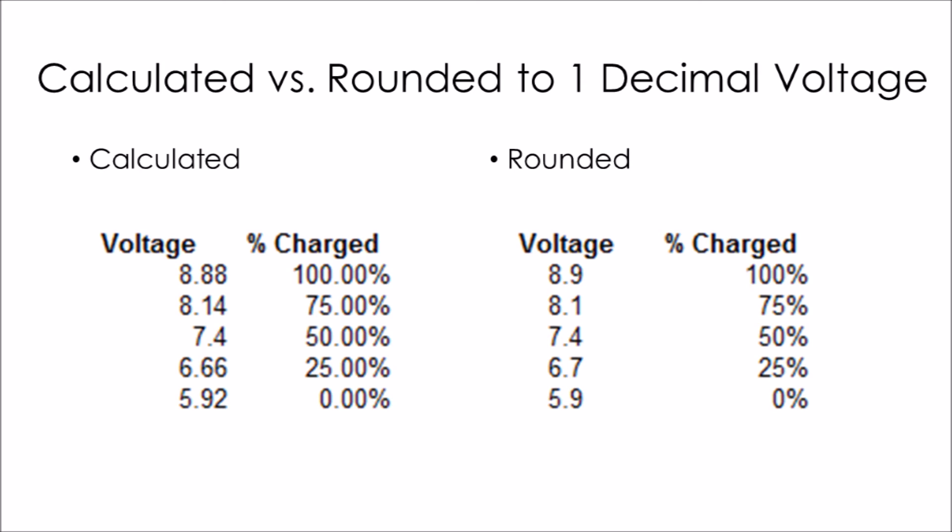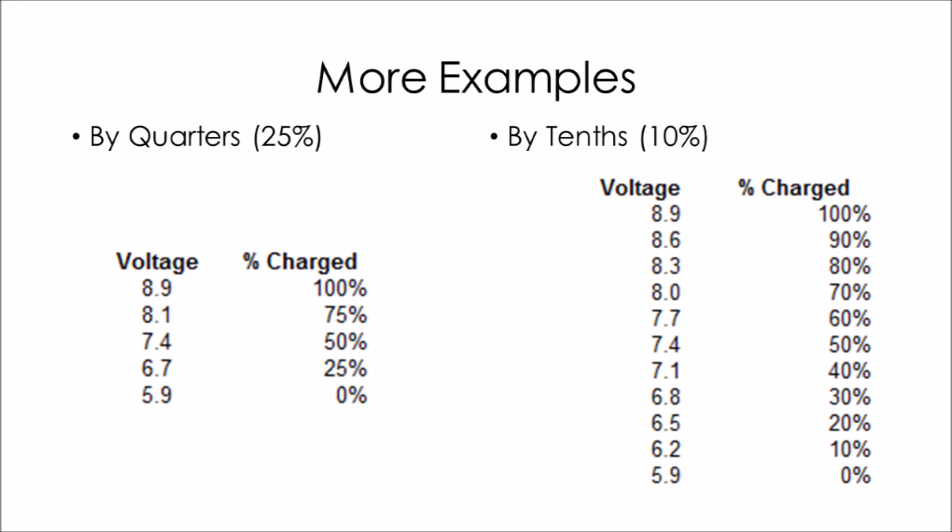Okay, now here's some charts of what the radio should actually read when you press the zero button. The chart on the left is by every 25% of battery power - so we've got 8.9 volts fully charged, 8.1 volts 75% left, 7.4 volts half your power's left, 6.7 25%, and 5.9 0%. And on the right I've done a little more finely tuned chart and it's by every 10% of battery power.